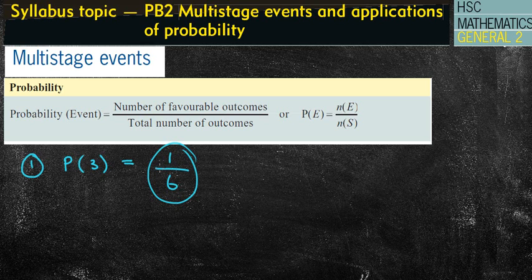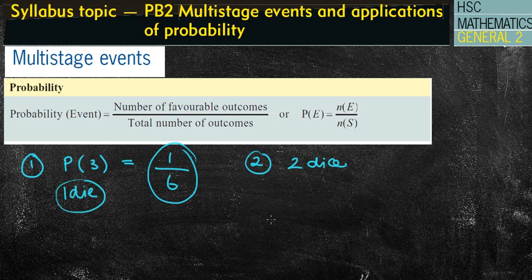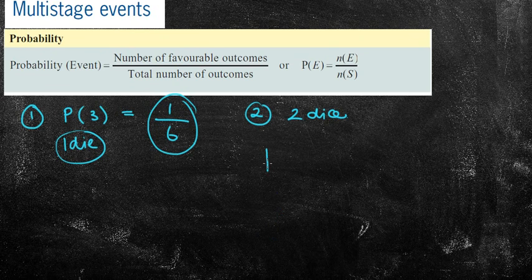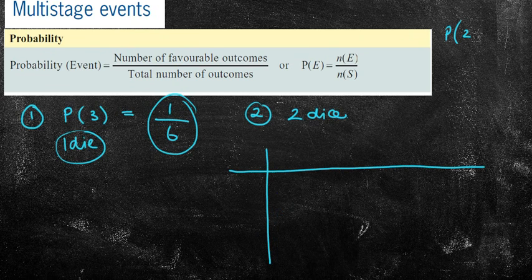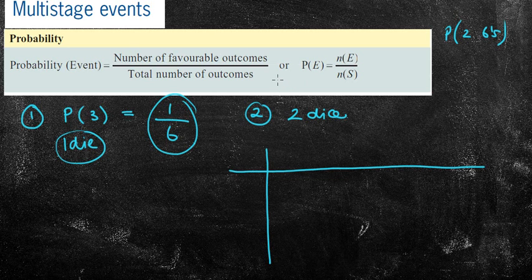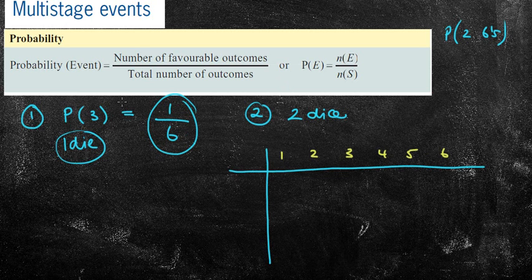Now, what happens when you have a multi-stage event? Let's say, for example, instead of throwing one die, we're going to throw two dice. Now, the problem with this is that you're going to have lots of different outcomes. What I would tend to do is not to draw a tree diagram because you're going to have 36 different outcomes. I'm going to use a table just to make it a little bit easier. I'm going to use different colours, so it's going to take me a little bit longer, but that's okay.